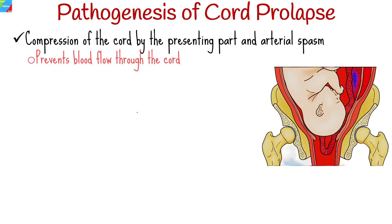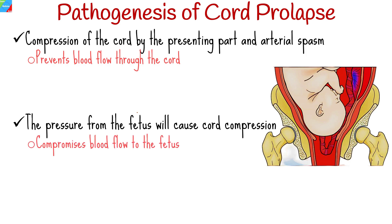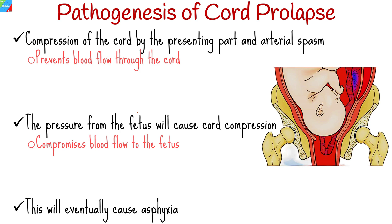Compression of the cord by the presenting part and arterial spasm prevents blood flow through the cord. The pressure on the cord from the fetus causes cord compression that compromises blood flow to the fetus, which will eventually cause asphyxia.